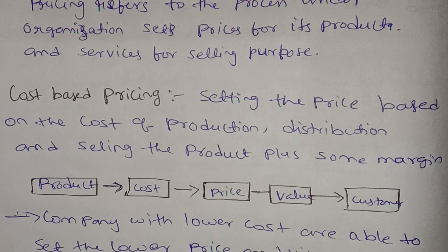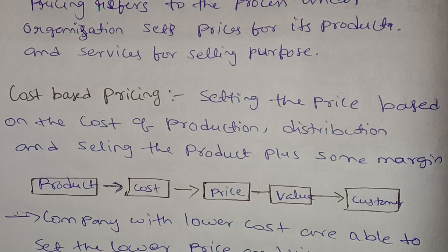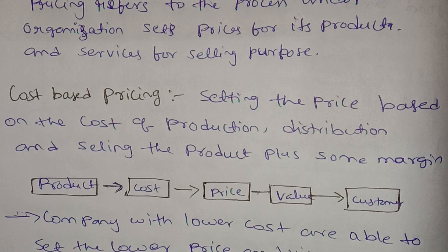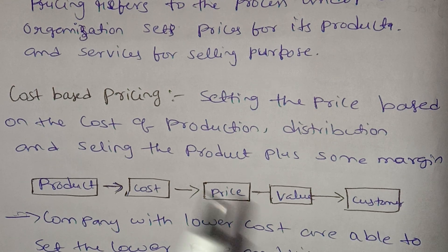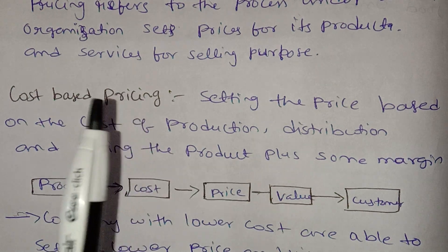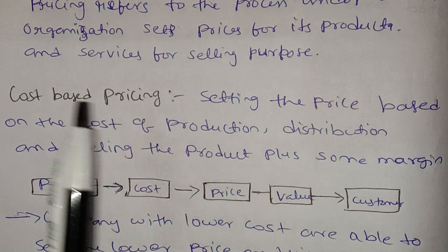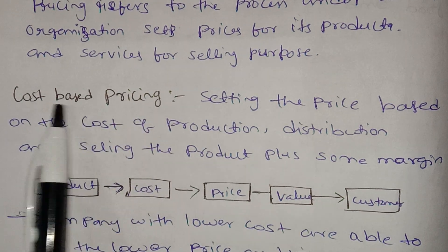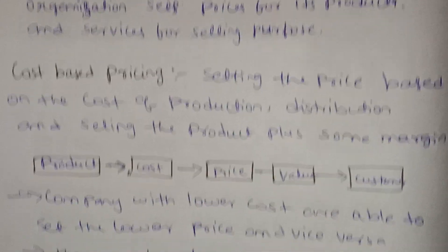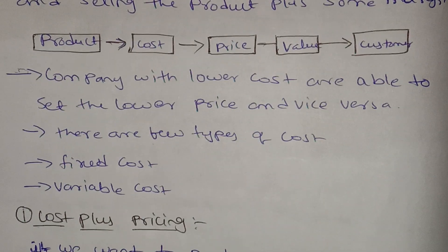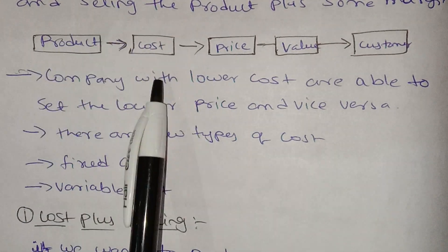To make a product, we consider raw material cost, labor cost, organization cost, land cost, and interest — these together form the product cost.